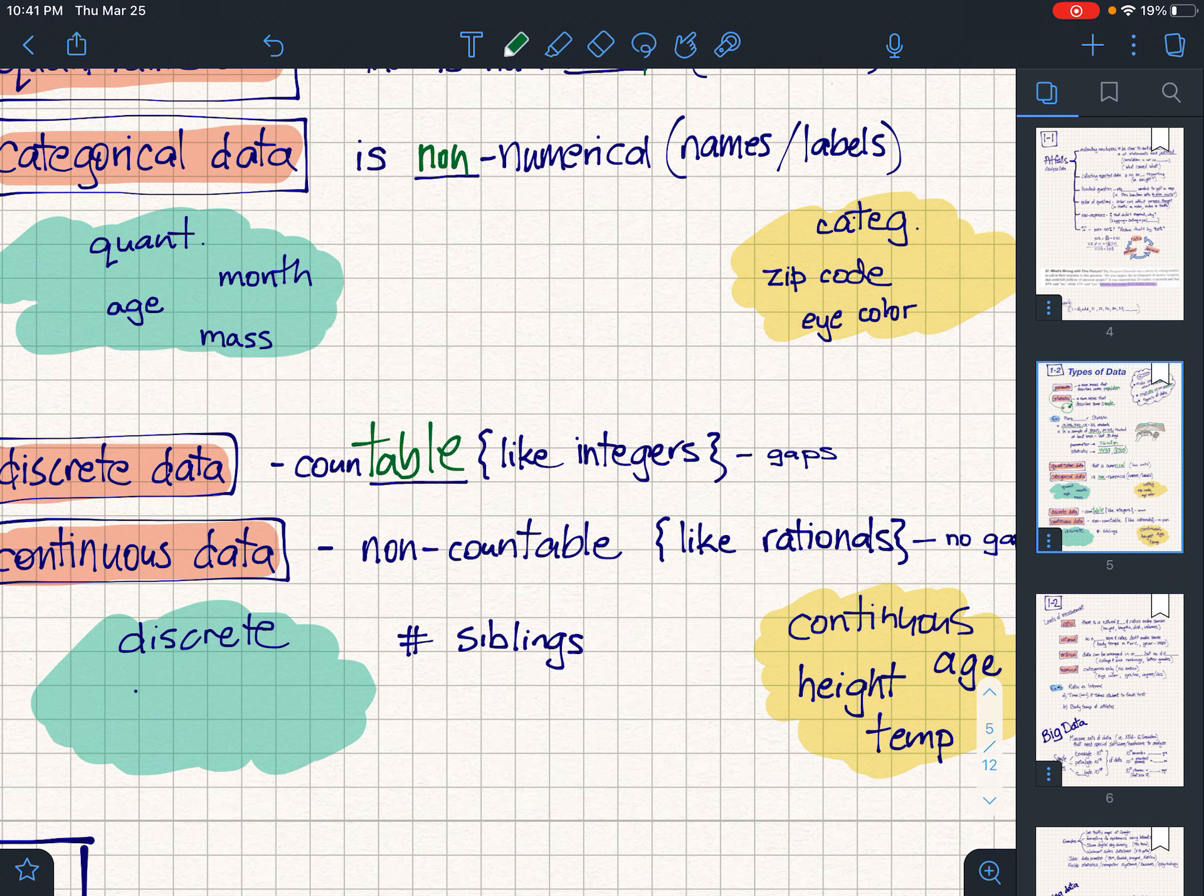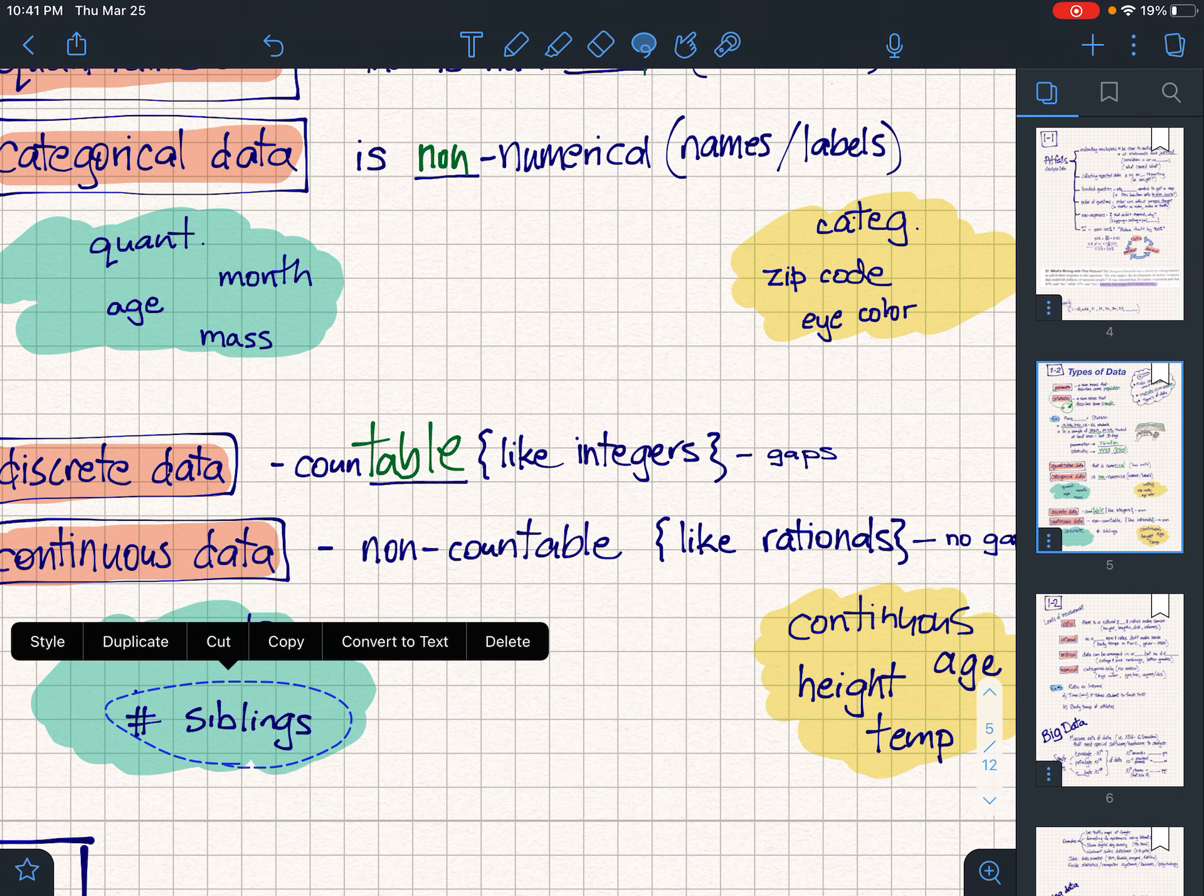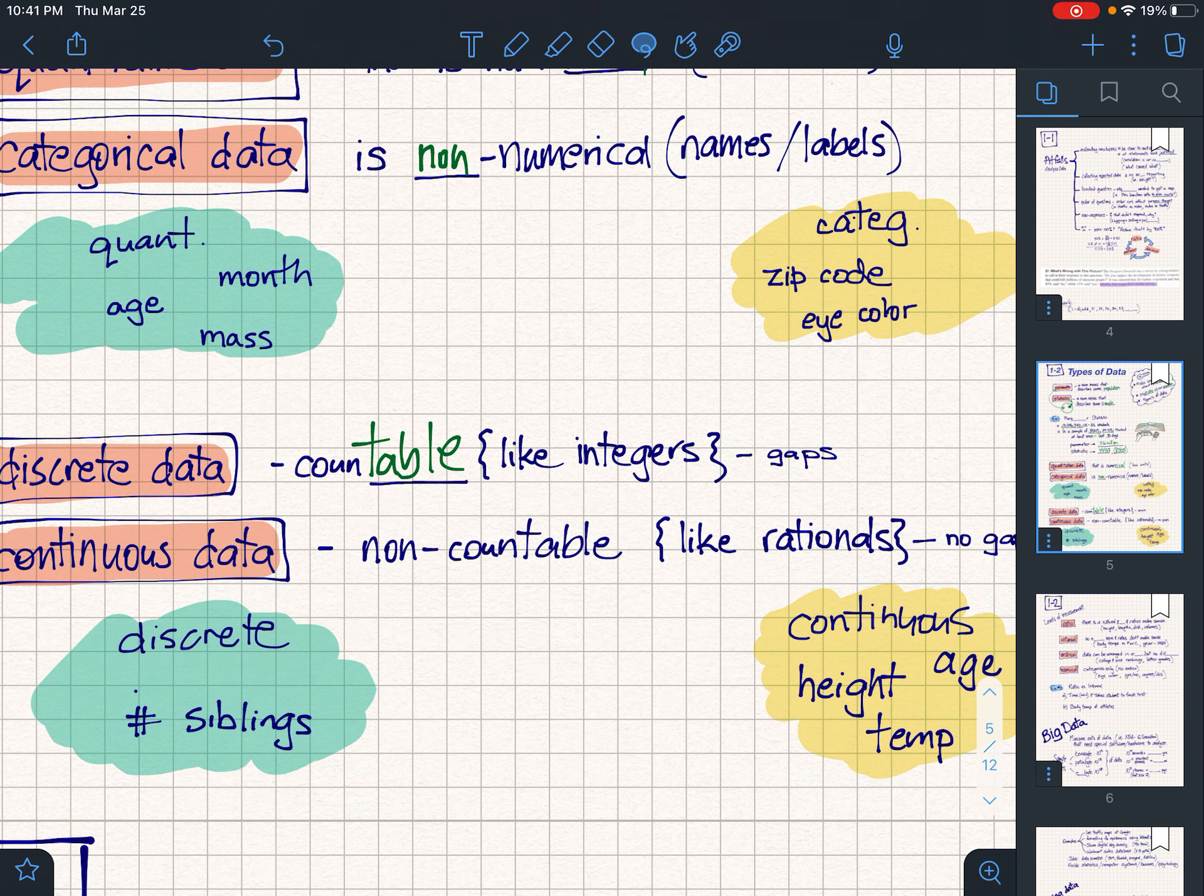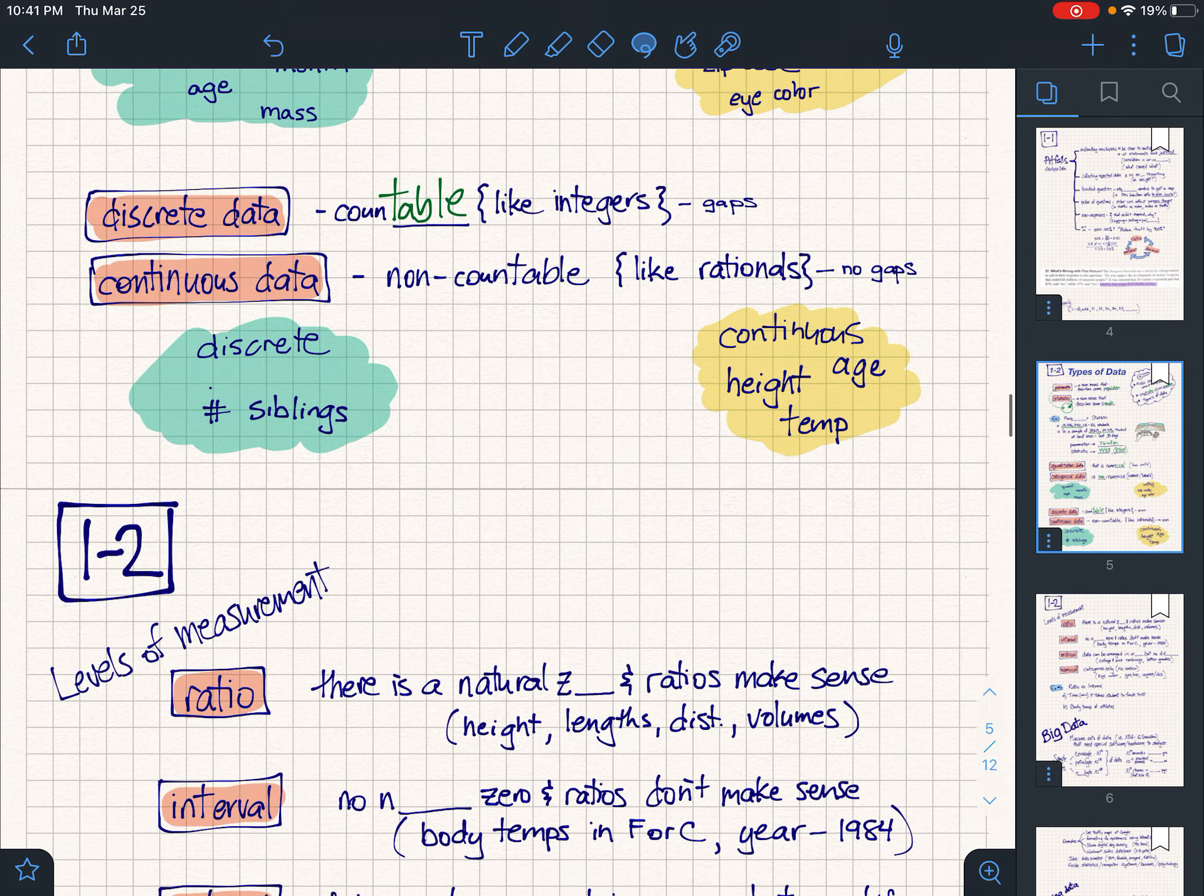If you were to say something like 15.7 they would say you're nuts, right? Either 15 or 16. Siblings, that's a discrete one. Hopefully you don't have any partial siblings hanging around.